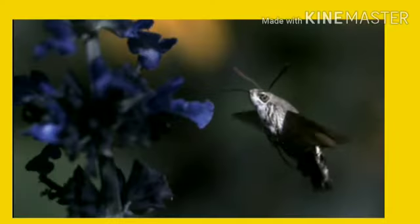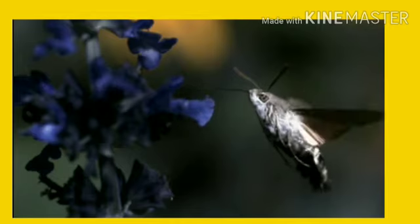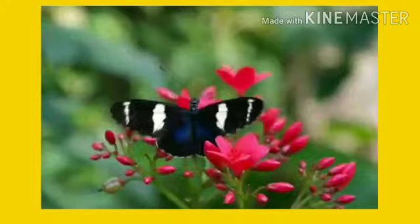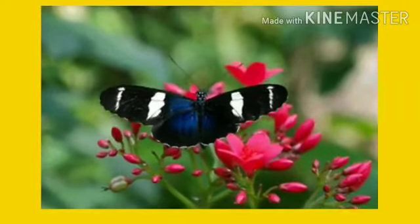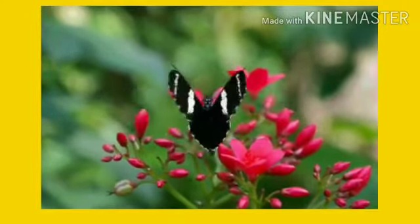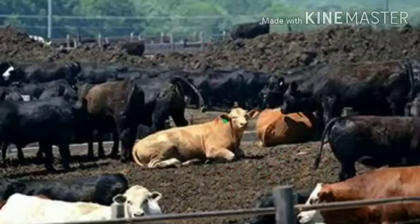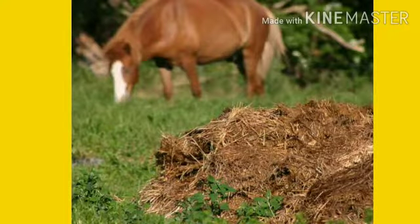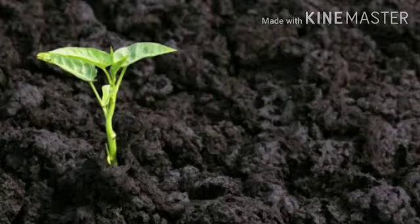Birds and insects help in pollination of plants. Droppings of animals also fertilize plants. When animals die, they decompose in the soil, making the soil more fertile.